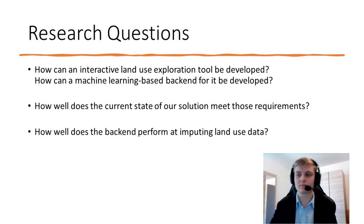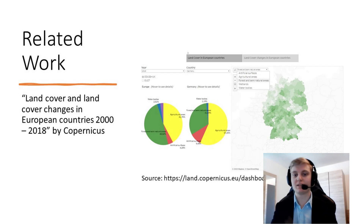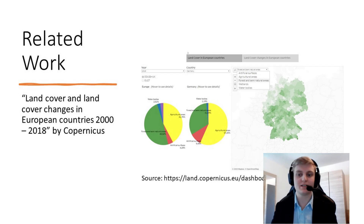But before we dive into those, let us consider some related work. First, Copernicus, the EU program for Earth observation, provides us with a neat visualization of land use and land cover in Europe between 2000 and 2018. We can see the potentials of each type of land cover, and we can also display the changes as bar diagrams. The big issue is that there is no animation displaying the drastic change over the years, and it's really neither interactive nor intuitive enough.